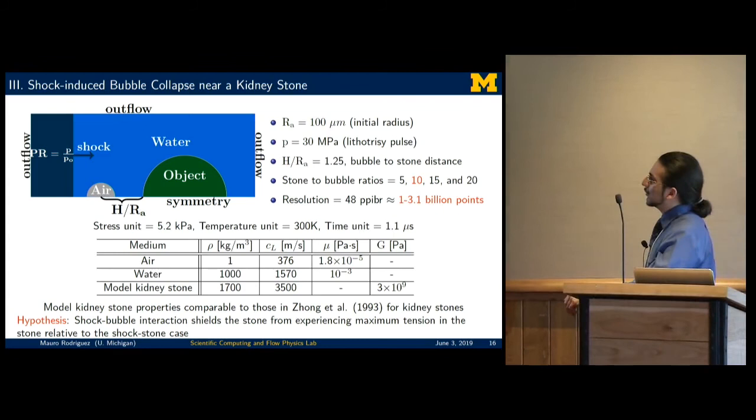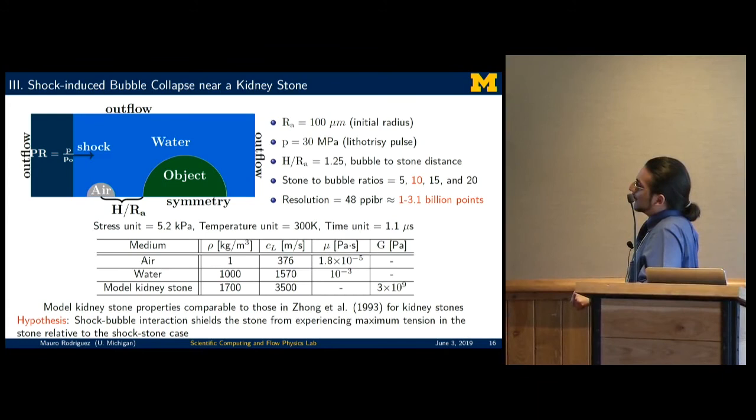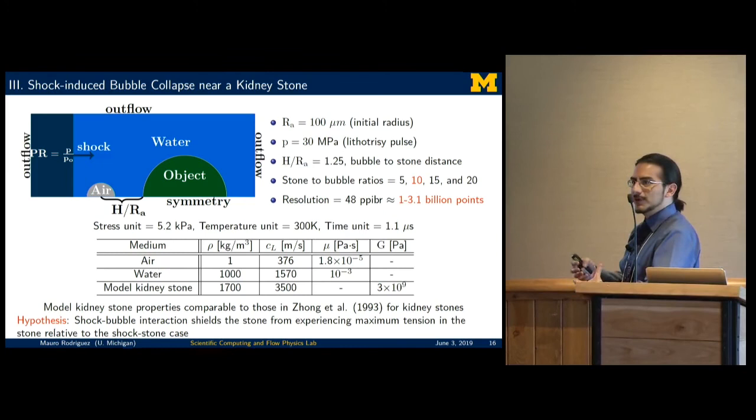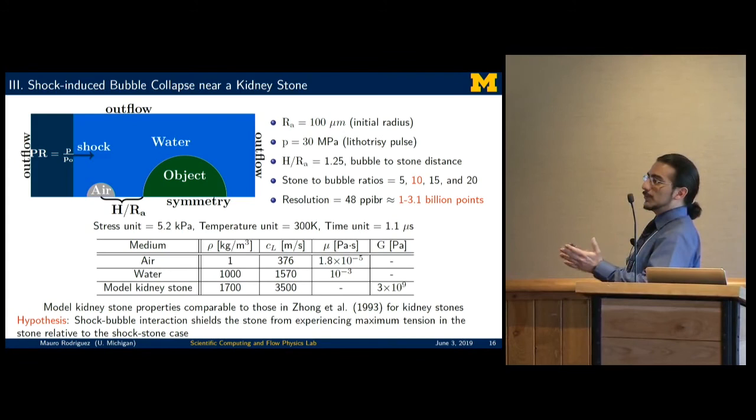I have very little time, so I'll quickly show you what happens when you collapse a bubble, an air bubble, near a very stiff object, in this case a kidney stone, a spherical kidney stone. Our impressions are that the shock bubble interaction ultimately shields the stone from experiencing the maximum tension that it would experience that could lead to the fracture of the stone relative to the case where you just have a shock wave interacting with a stone. That's exactly what I'm showing you here.